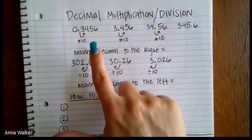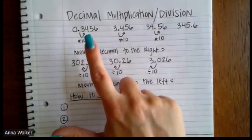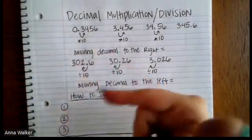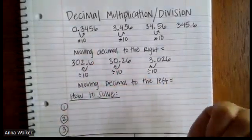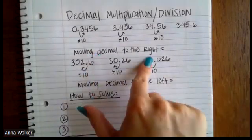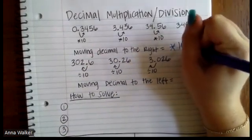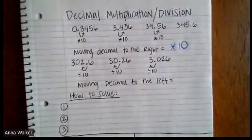And essentially what we're doing is every time we move our decimal place one place value to the right, that is the same thing as if we took this number and multiplied it by 10. So when we move our decimal place to the right, essentially what we are doing is we are multiplying by 10.